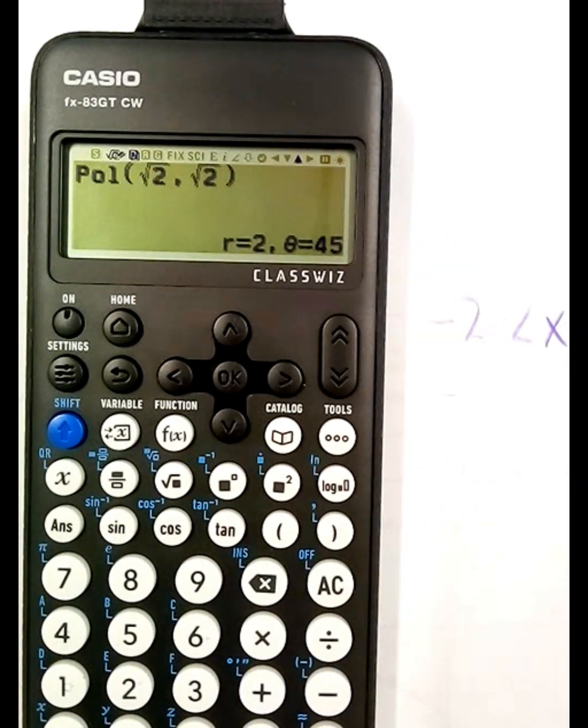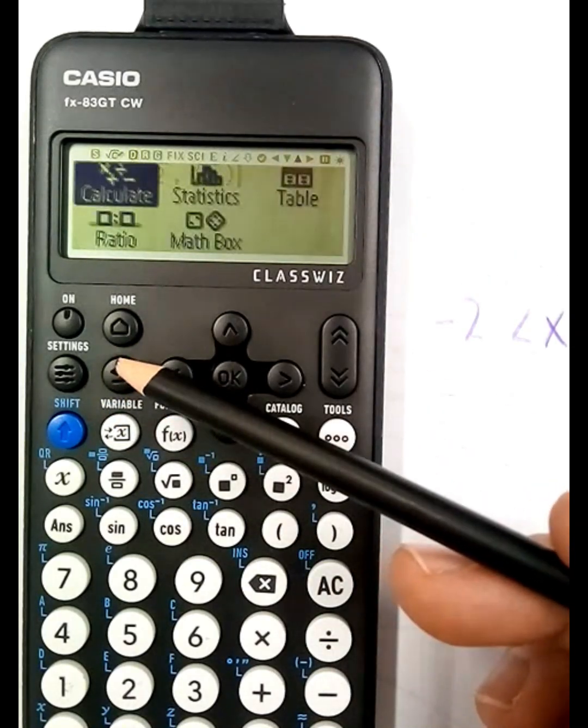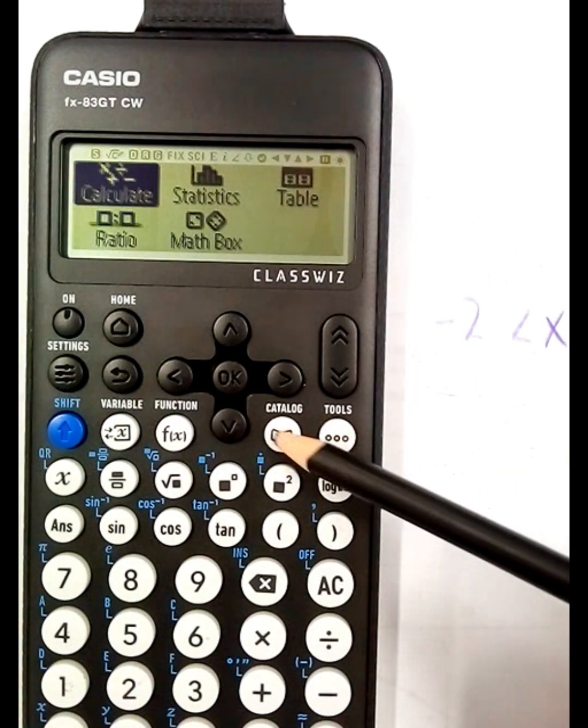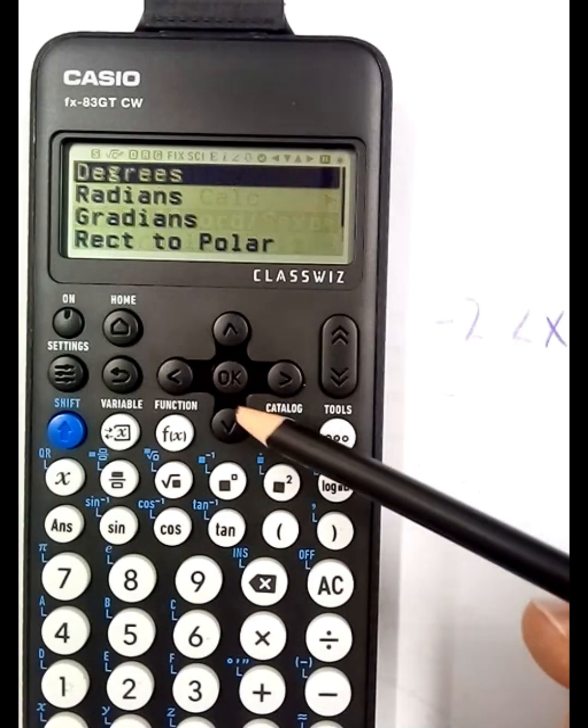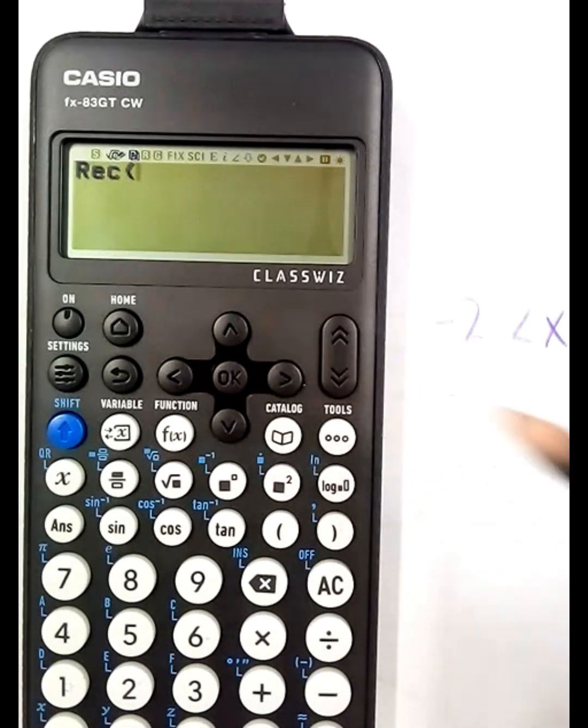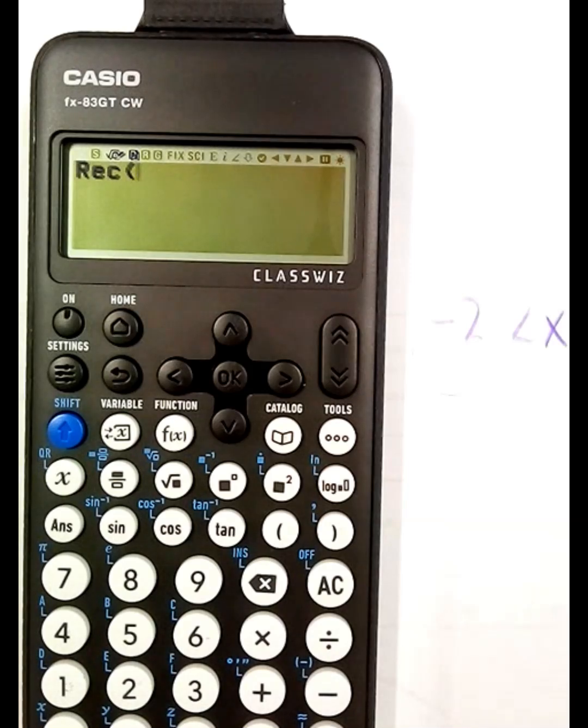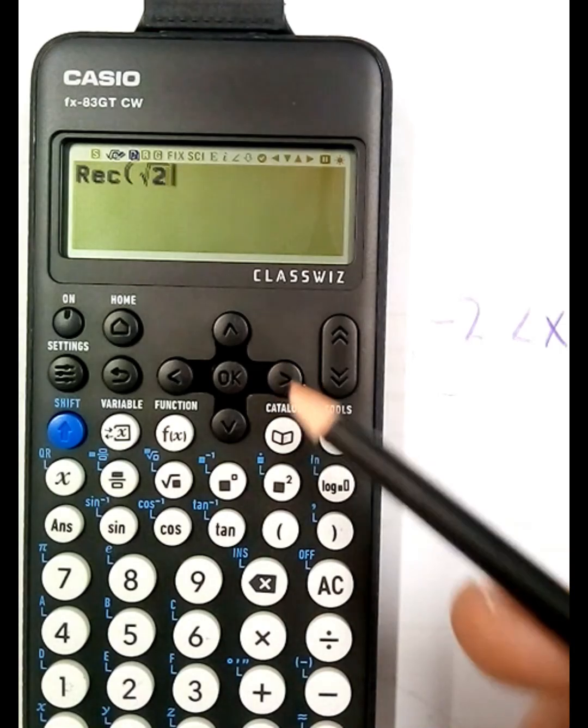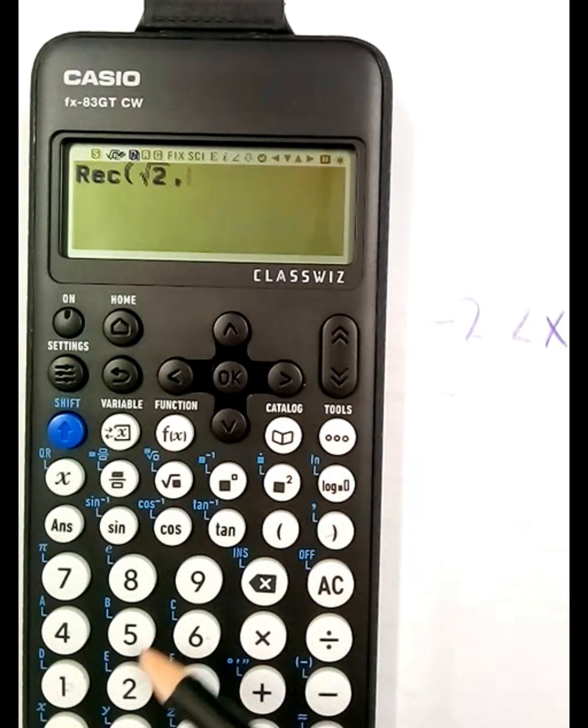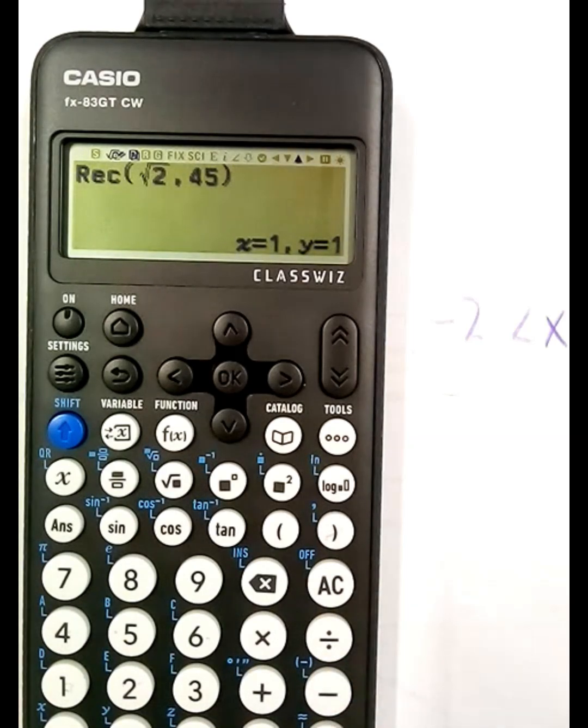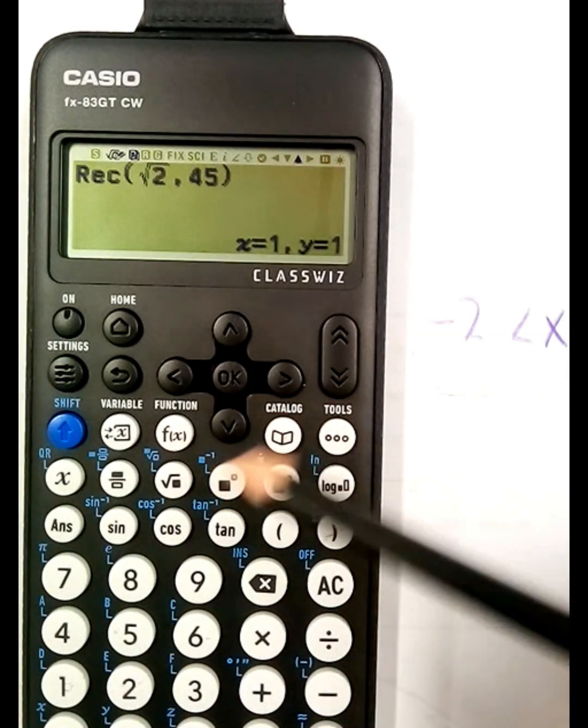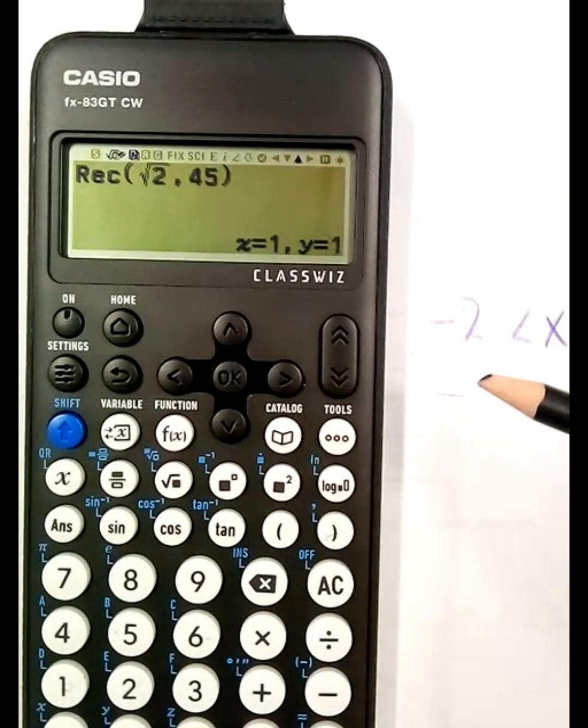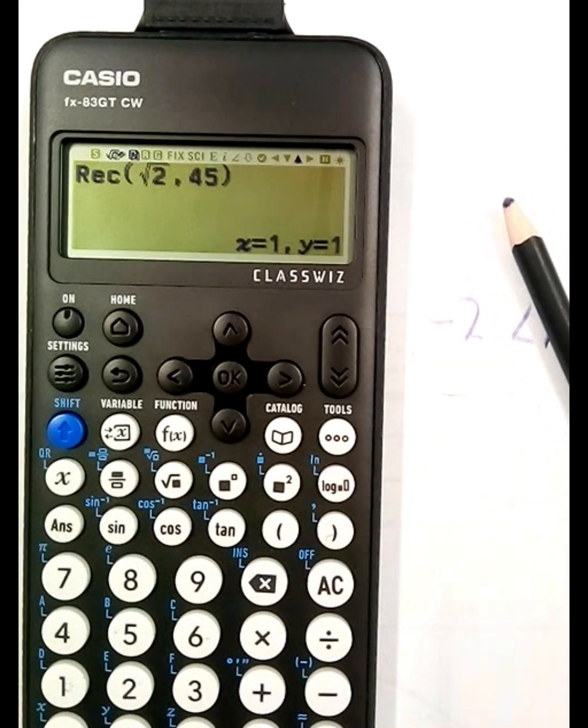Now to convert polar back you just do the reverse. So convert polar back, put in root 2, 45, and there you have the coordinates: one and one. One up one across, that'll give you an x and y of root 2. So there you have it, that's how it works. Hope that helps you.